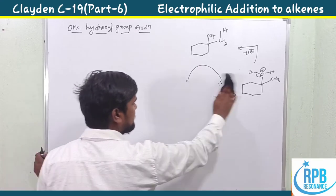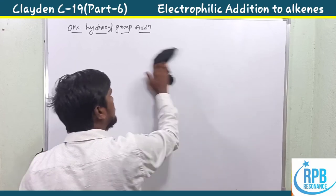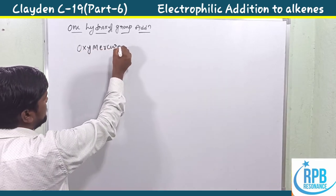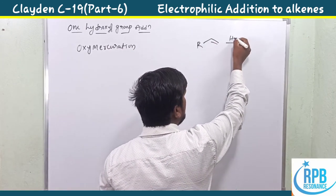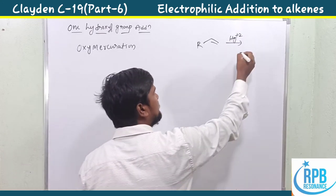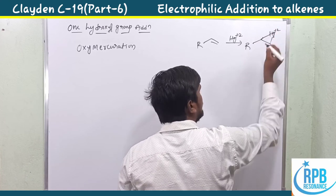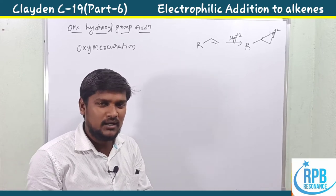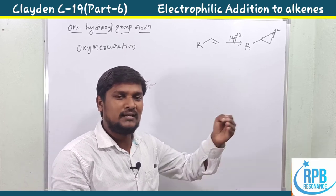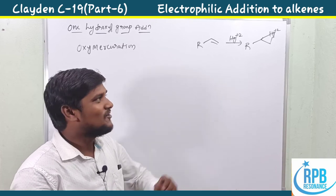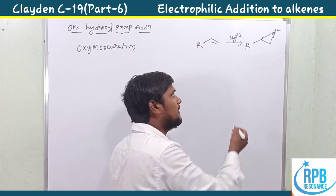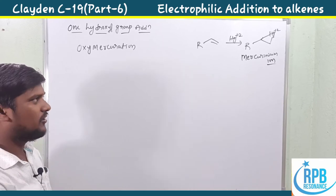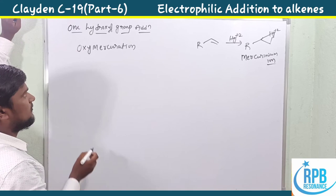To overcome this problem, we use a transition metal for more efficient monohydroxylation. That transition metal is mercury. Simple hydration is not favorable, so instead we use a process called oxymercuration. The alkene treated with mercury in the +2 oxidation state forms a mercurinium ion intermediate — analogous to the halonium ion formed with halogens.